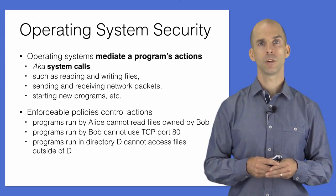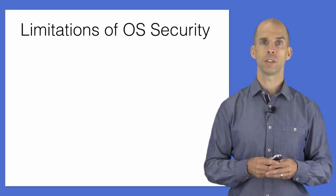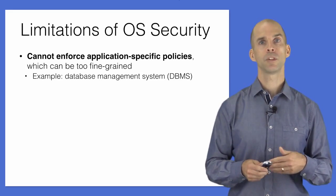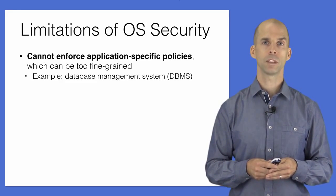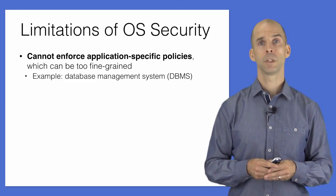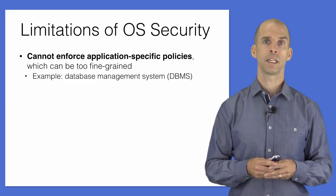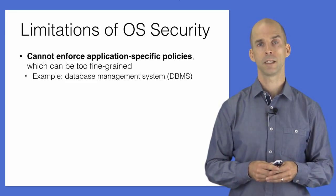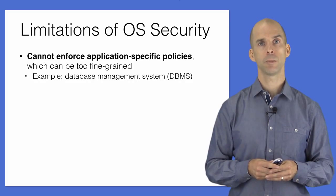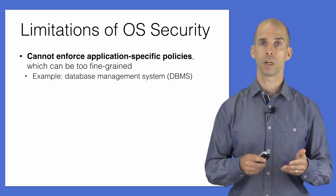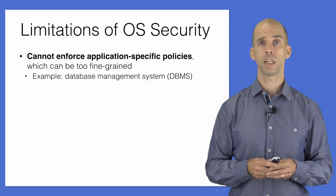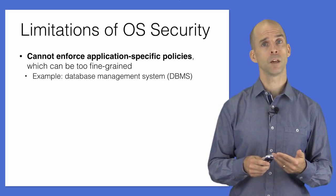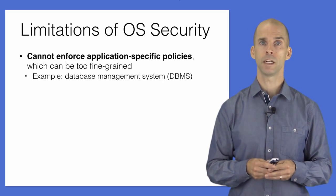Operating system security is critically important but not always sufficient. Some security-relevant actions of a program are too fine-grained to be mediated as system calls, so the software itself needs to be involved. For example, a database management system (DBMS) is a server that manages data whose security policy is specific to the application using that data. For an online store, a database may contain security-sensitive account information for customers and vendors, alongside non-sensitive records such as product descriptions. It is up to the DBMS — not the OS — to implement security policies controlling access to this data.